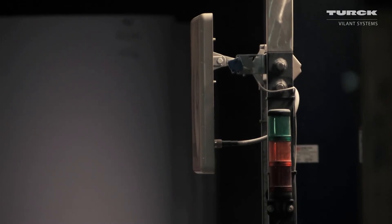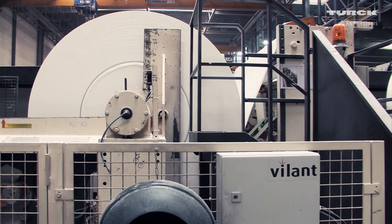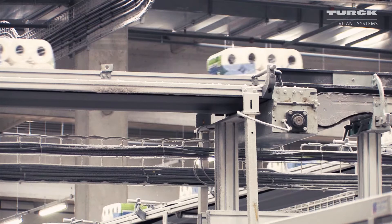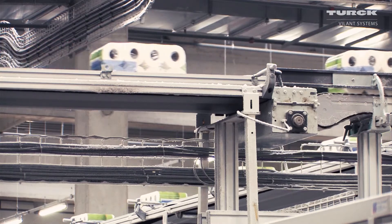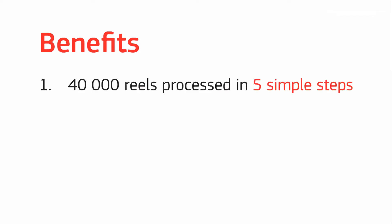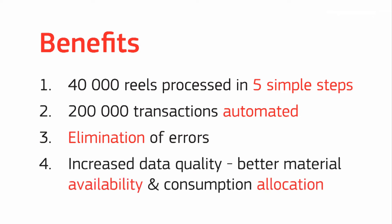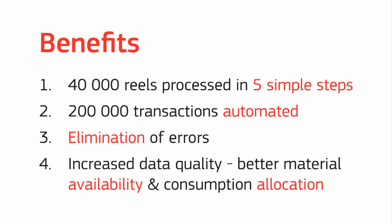Reel identification and monitoring with RFID makes it possible to raise production efficiency, improve utilization rates, and improve quality of both the paper making and the paper converting. For SCA's facility, every year over 40,000 reels are processed in 5 simple steps, automating over 200,000 manual barcode or other transactions. The system no longer relies on manual material movement processing, thus eliminating errors. Subsequently, data quality has increased, meaning improved material availability, less scrapping, and fully automated production traceability.